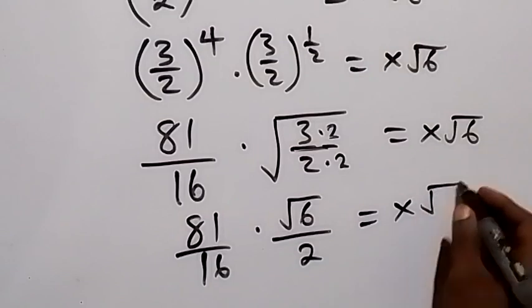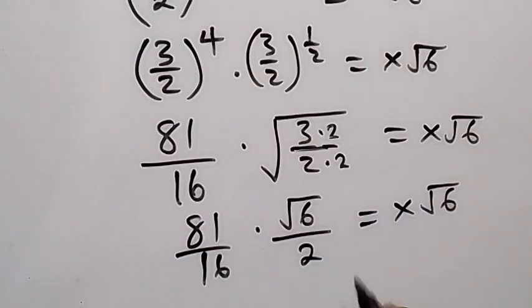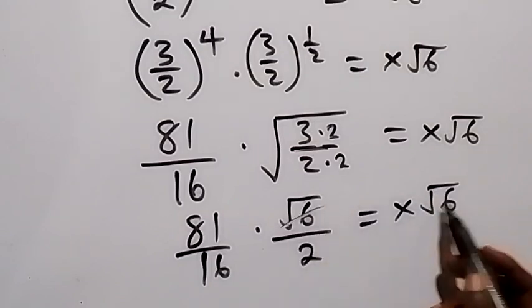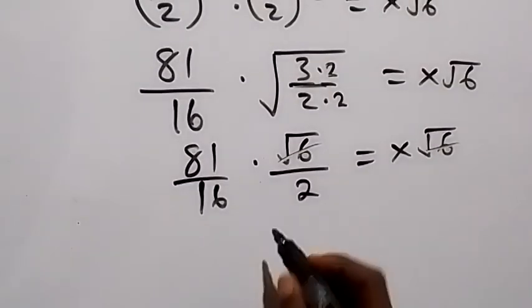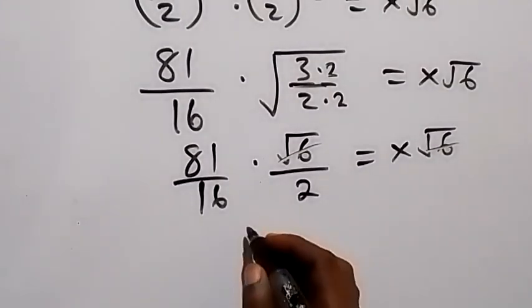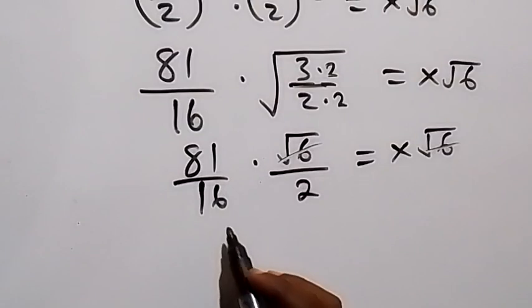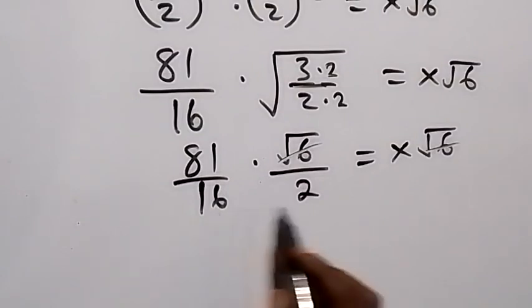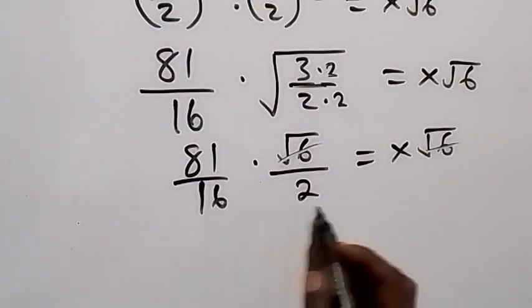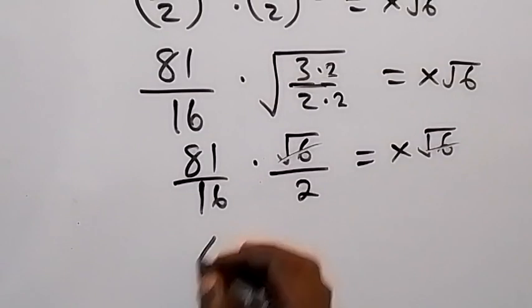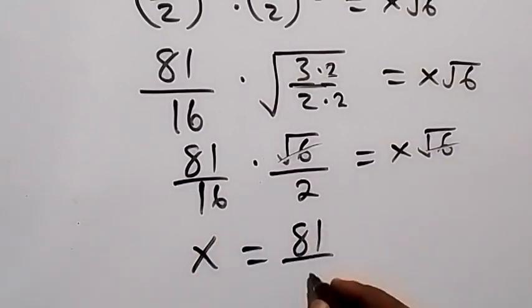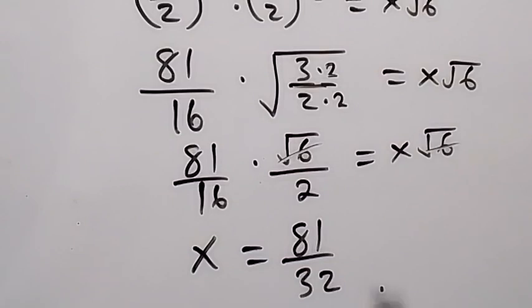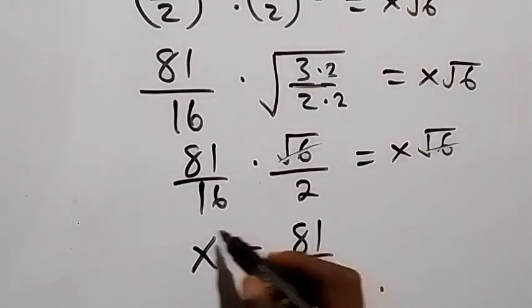Now we can divide both sides by root 6, so root 6 cancels out. From here we have 81 over 16, and the denominator 16 times 2 gives 32, which means x equals 81 over 32. And here we have the value of x.